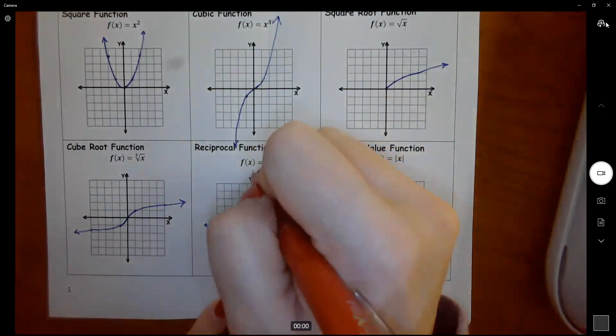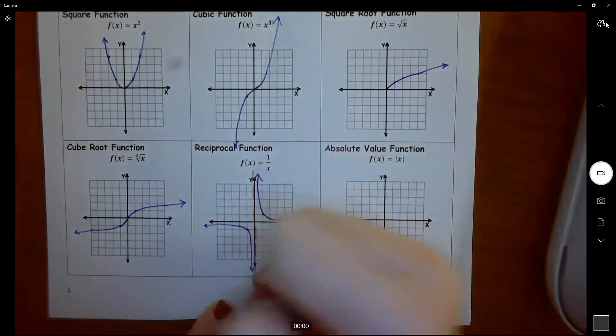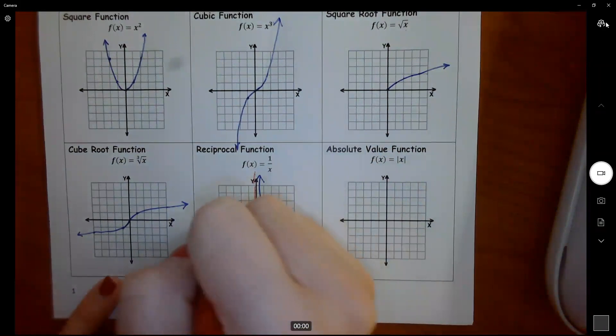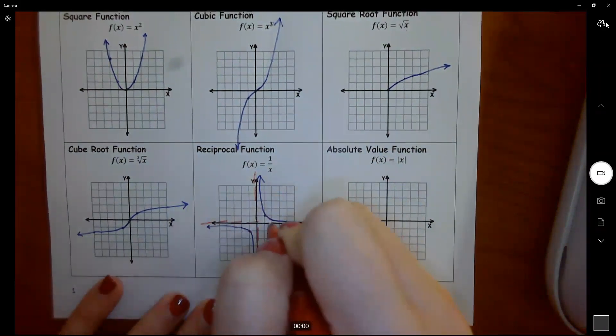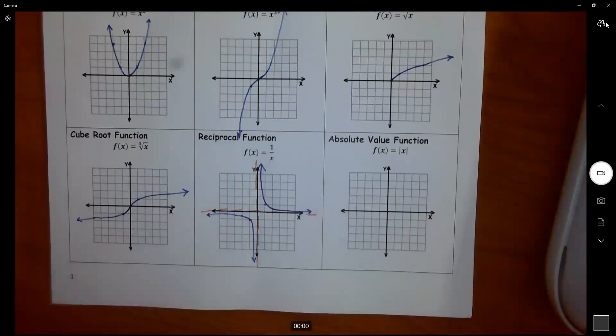What we have right here, I'm going to put dotted lines. We have what's called asymptotes. And when we get more into rational functions, we're going to learn more about those.